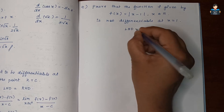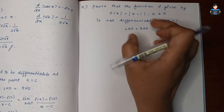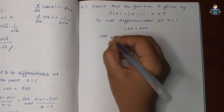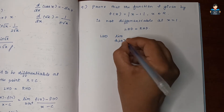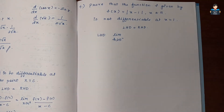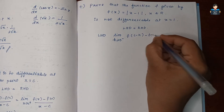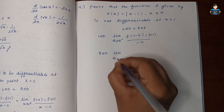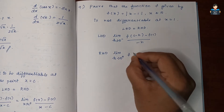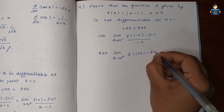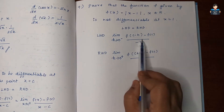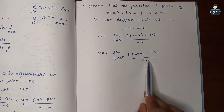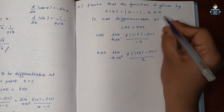To prove not differentiable, we check the left-hand derivative and right-hand derivative. Left-hand derivative: limit h tends to 0 minus, f(c - h) - f(c) by (-h). Right-hand derivative: limit h tends to 0 plus, f(c + h) - f(c) by h. Here c = 1, so we substitute accordingly.